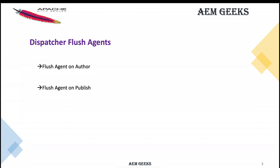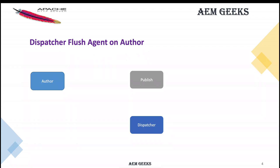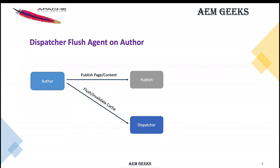You can set up a Dispatcher Flush Agent either on Author or Publish. Setting up on Publish has a slight advantage — we'll talk about that in the second part of this tutorial. Let's see how it works when setting up on Author. We already have a Replication Agent, and we will be setting up a Dispatcher Flush Agent. As soon as we publish some content, the Replication Agent publishes that content and the Dispatcher Flush Agent sends a request to clear the cache of that published content.